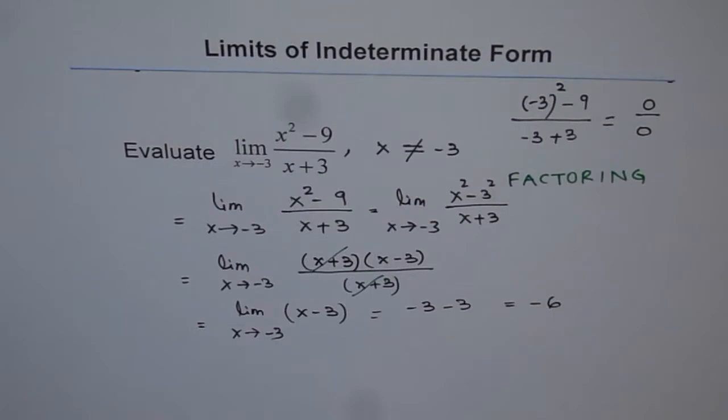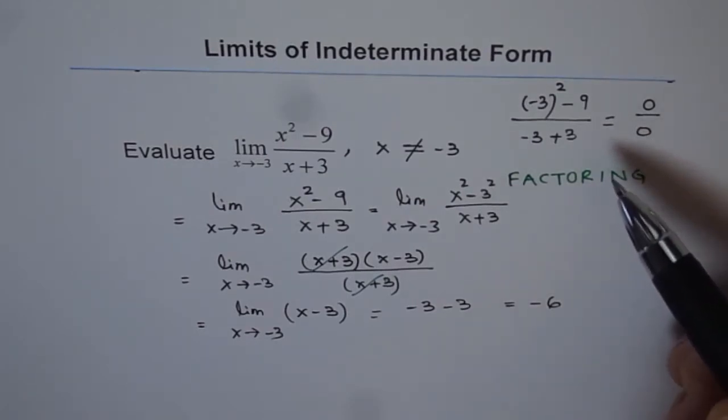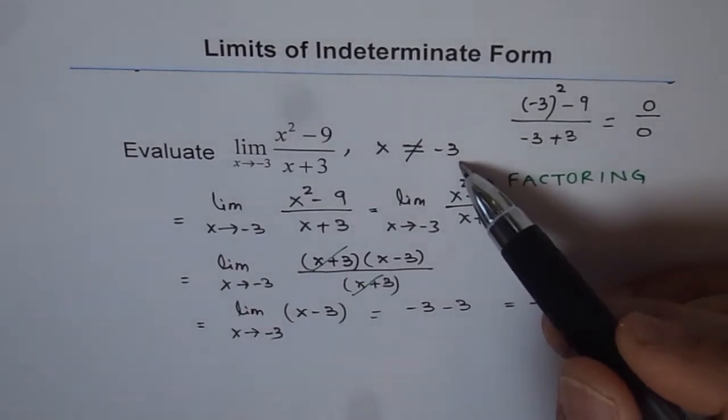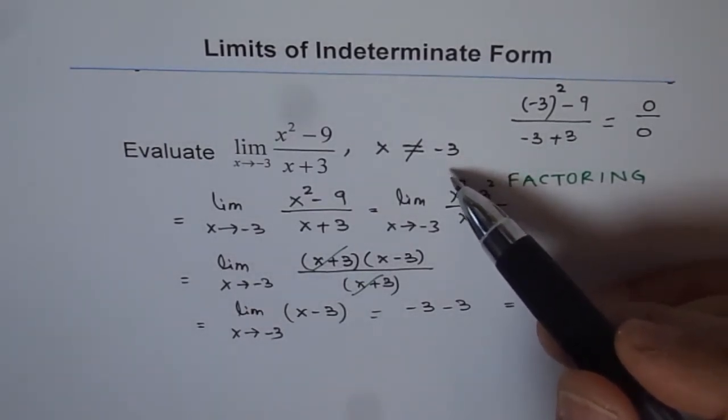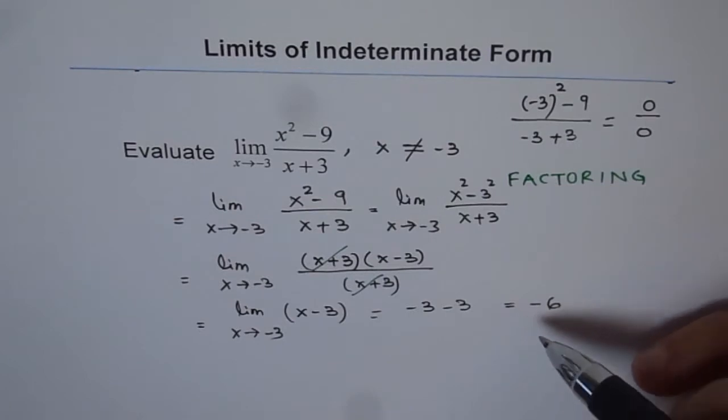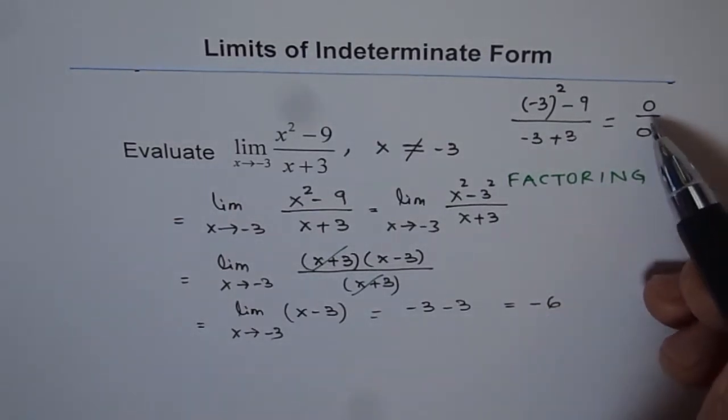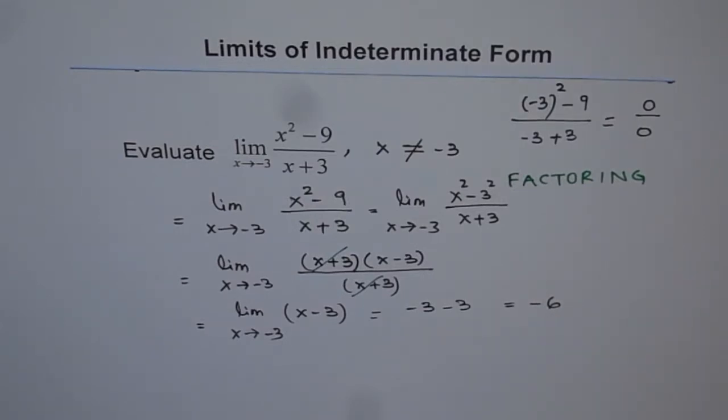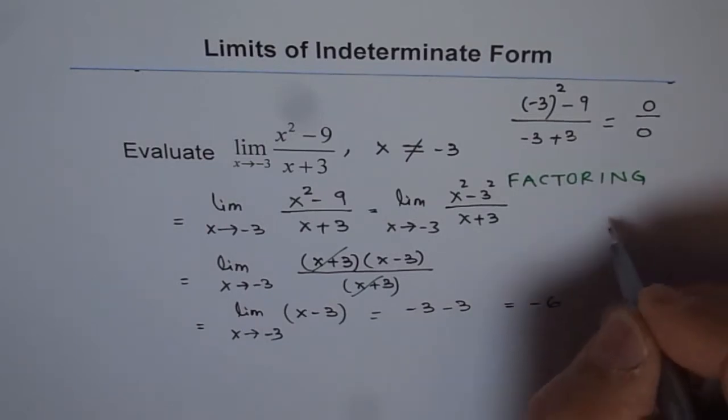Now as you can see, the function does not have minus 3 in its domain. The function does not exist at x equals minus 3, but the limit does exist. So we have a hole here at x equals minus 3. I can actually show you so that it helps you to understand.